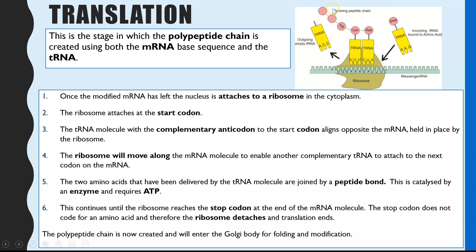tRNA molecules float around within the cytoplasm. Each tRNA molecule has an anticodon — three bases at its bottom — and an amino acid attachment site at the top. Therefore each tRNA molecule will bring a specific amino acid determined by its anticodon. The tRNA molecule with the complementary anticodon to the start codon aligns opposite the mRNA, and the ribosome holds them in place — that is the role of the ribosome.